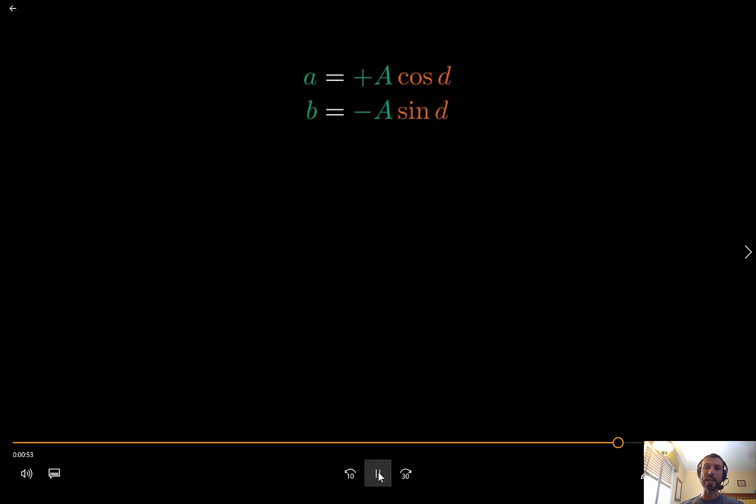If we instead divide the second equation by the first equation and equate the coefficients on both sides, we get Ab/a = -sin(d)/cos(d), which we can solve using arctangent to obtain a formula for the phase shift d.